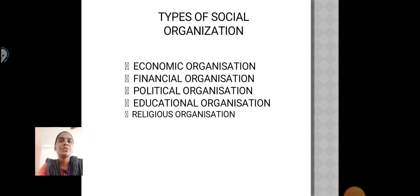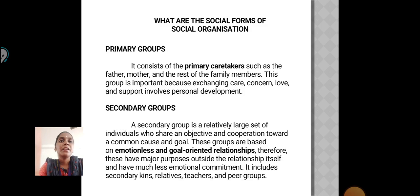Types of Social Organization: There are five types. First, Economic Organization. Second, Financial Organization. Third, Political Organization. Fourth, Educational Organization. Fifth, Religious Organization. What are the social forms of social organization?